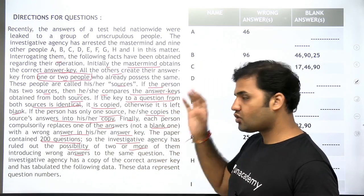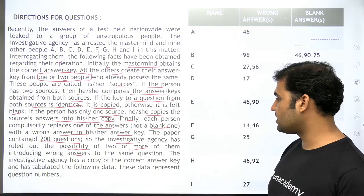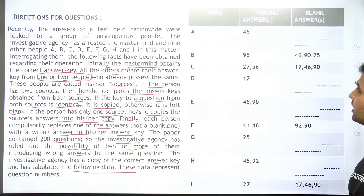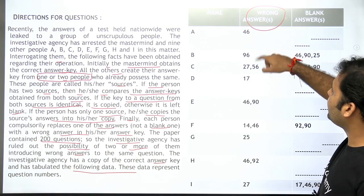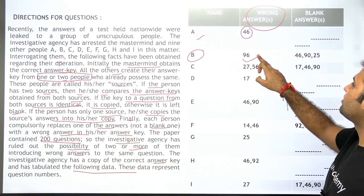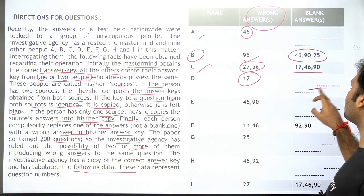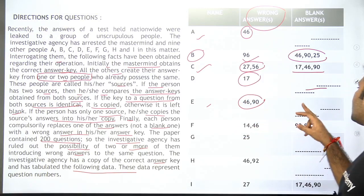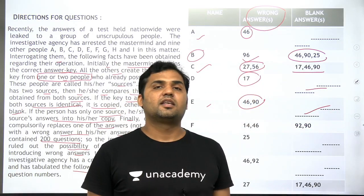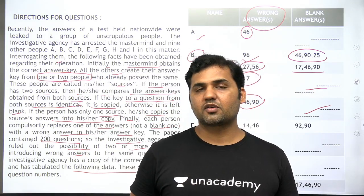So that's the whole story. You need to keep this basic structure in your mind. The investigating agency has a copy of the correct answer key and has tabulated the following data. In this data, you have the wrong answers — for example, A's answer key has question 46 wrong, no blanks; B's answer key has question 96 wrong, three blank answers; C has 2 wrong answers and 3 blanks; D has 2 wrong answers and no blanks, and so on. From the table, observe that the mastermind's answers are all correct, and everybody introduces one wrong answer to one particular question.